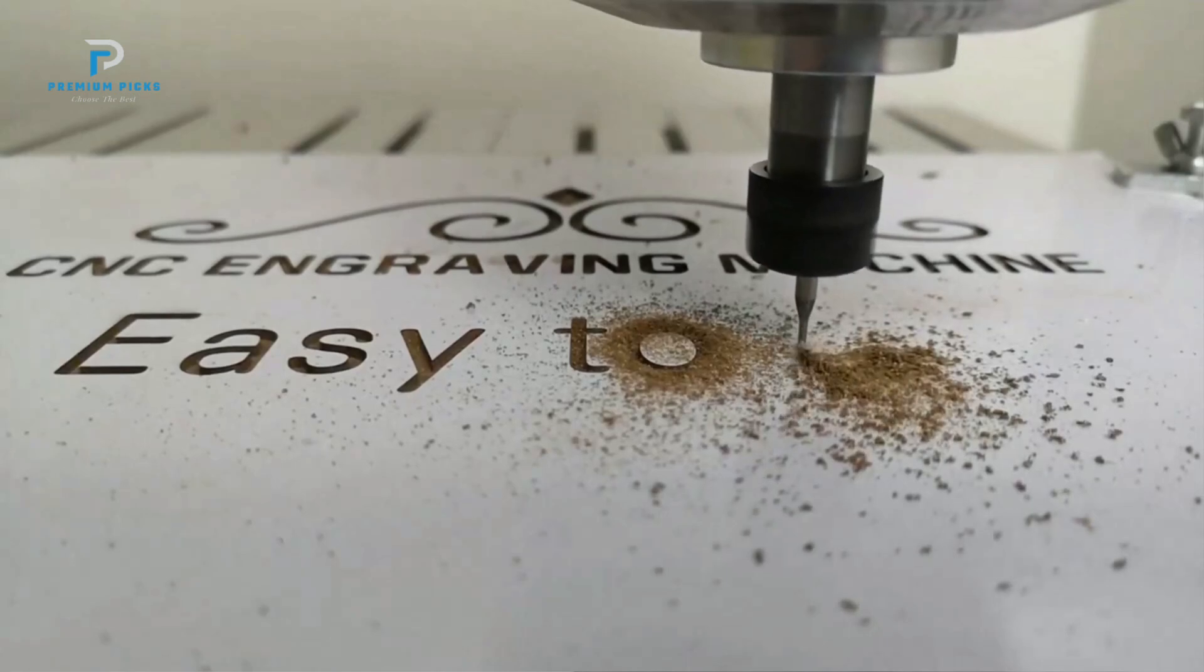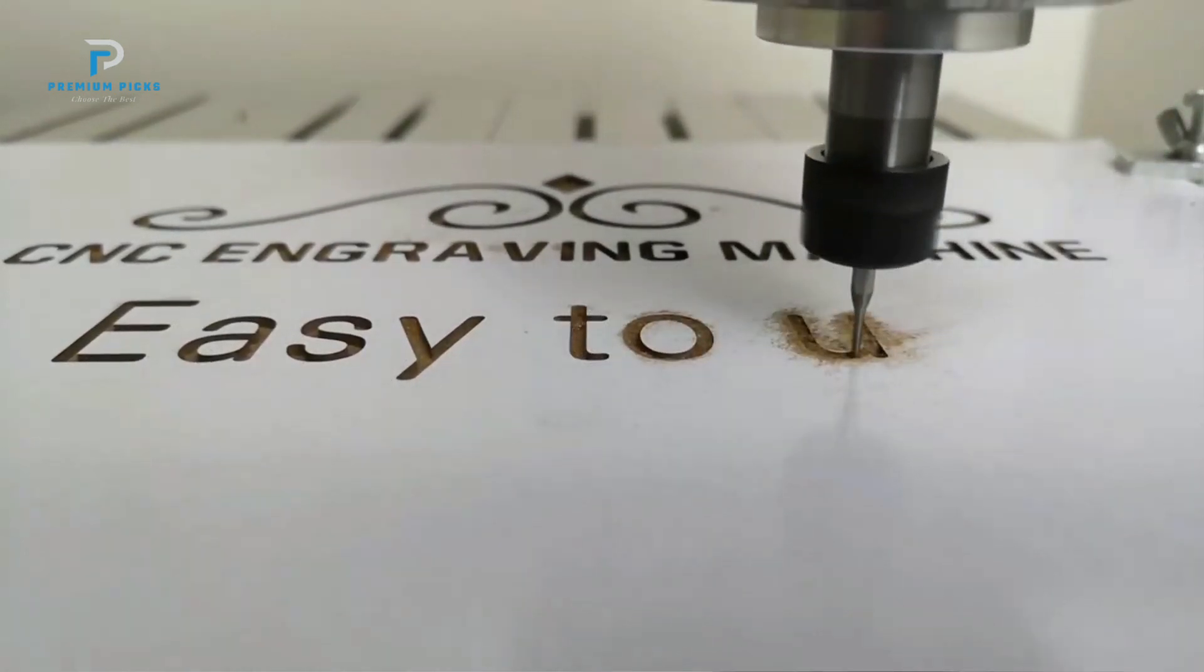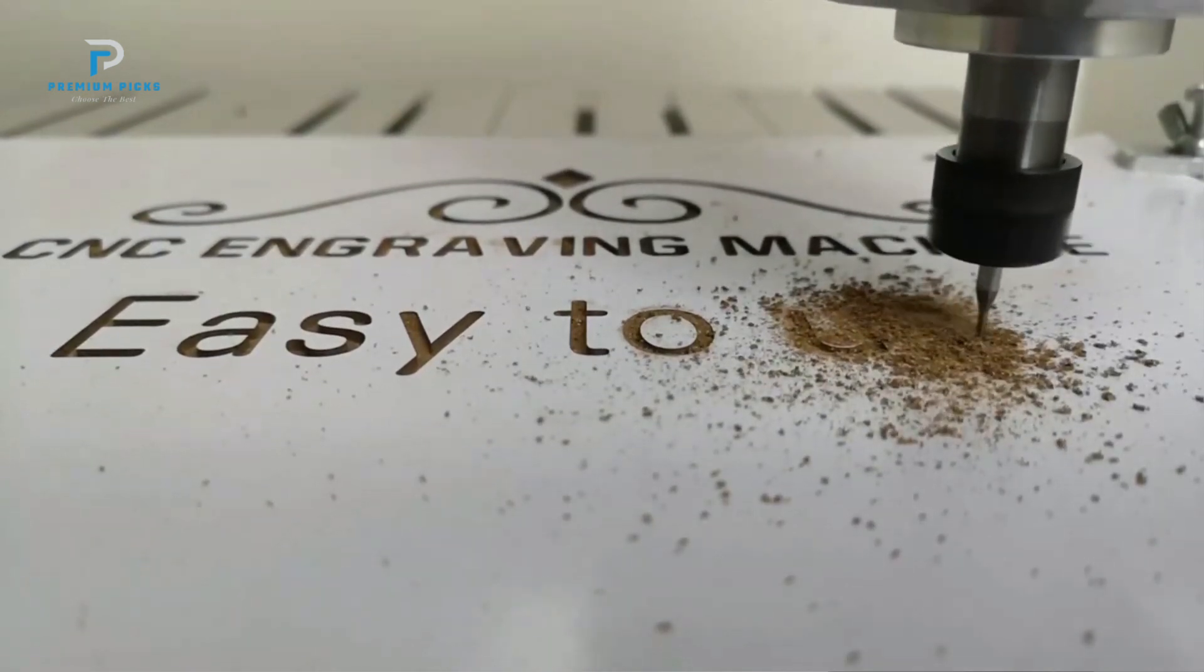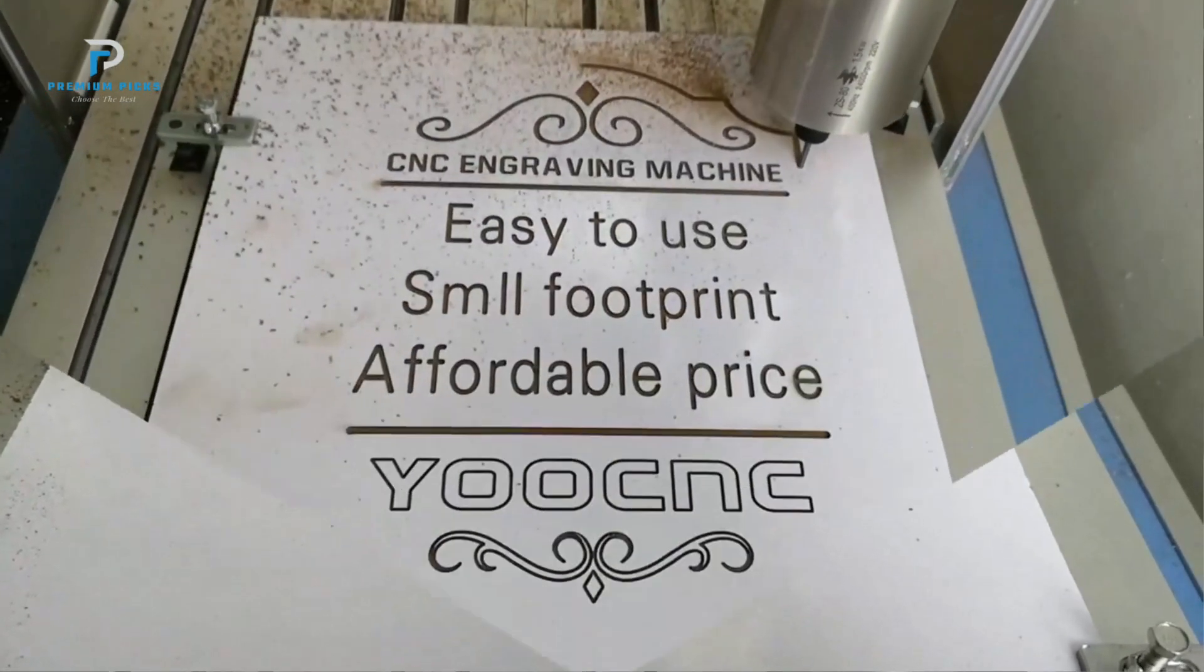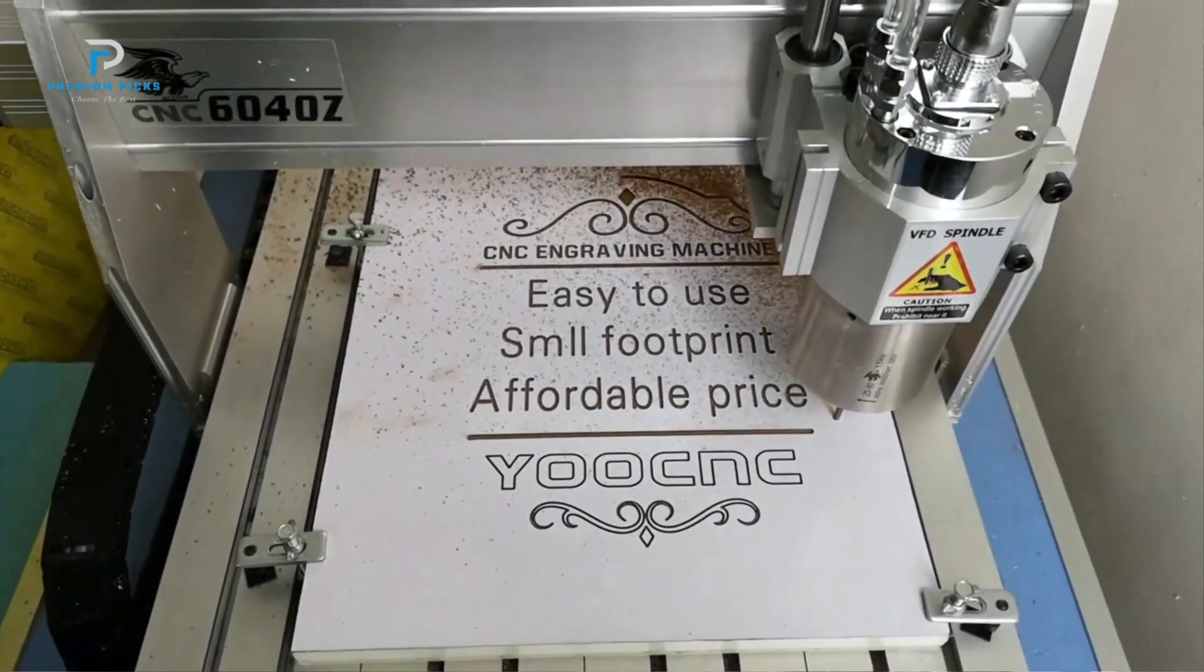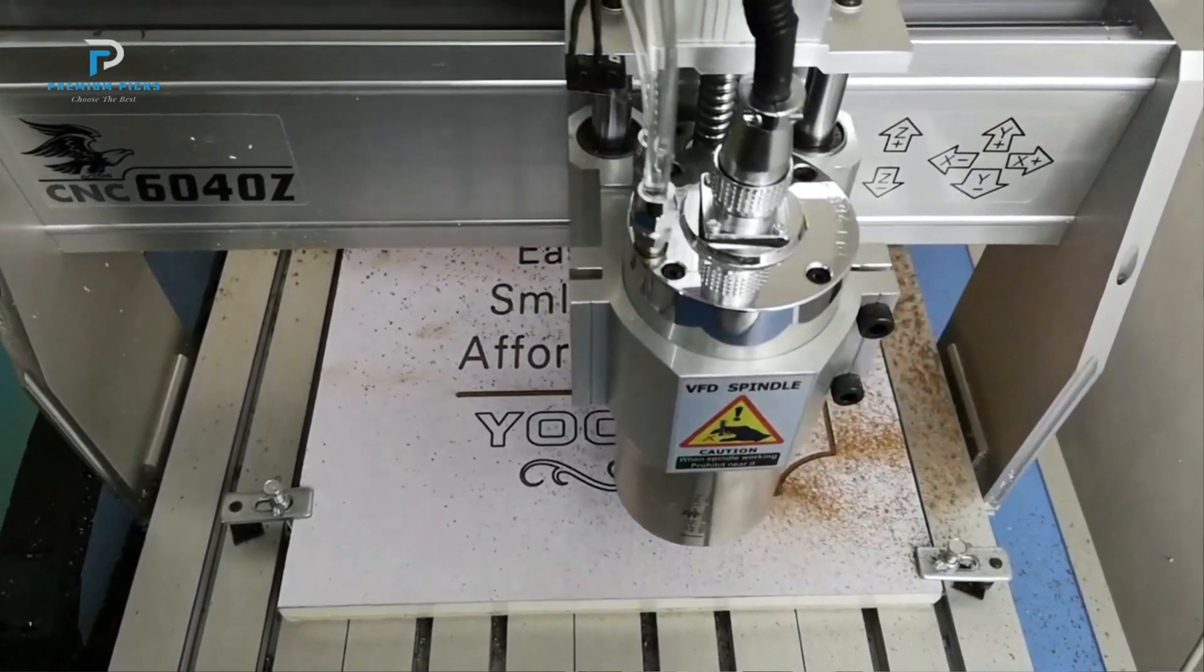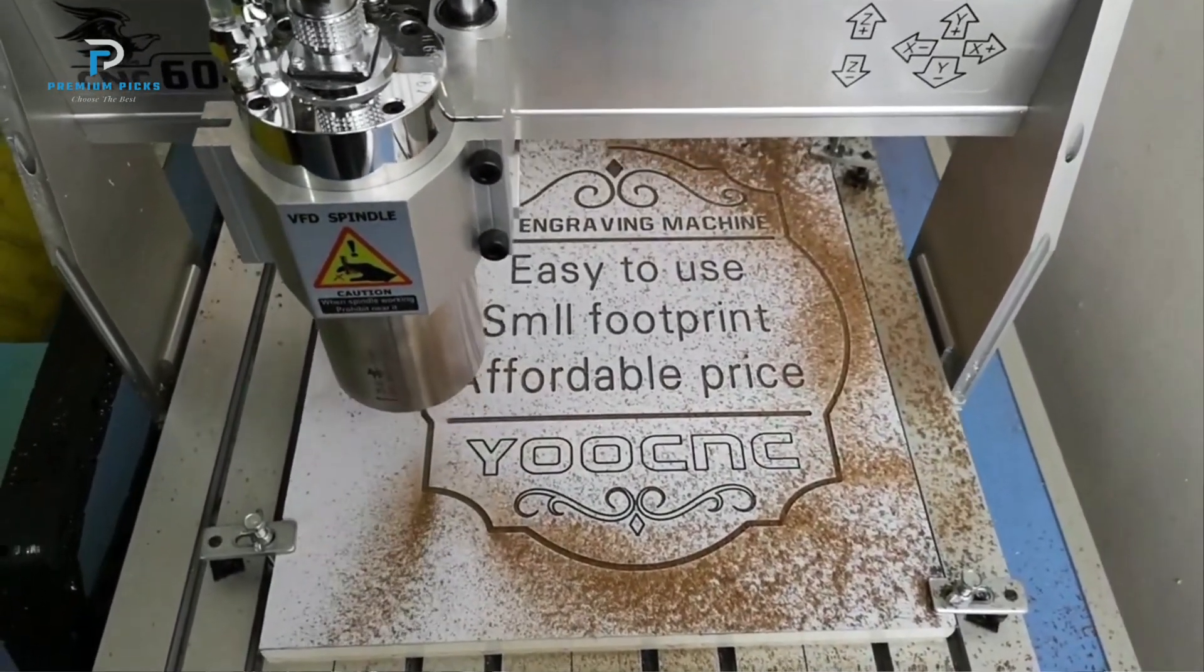Four-axis configuration for rotational engraving. A standout feature of the LY8060Z is its four-axis setup, which includes a rotational fourth-axis. This enables users to engrave on cylindrical objects, adding versatility to your engraving projects. Whether you're engraving wood, metal, or other materials, this fourth-axis allows for more creative and complex designs that are not achievable with traditional three-axis machines.